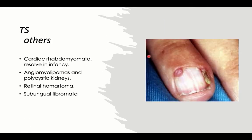Another skin manifestation that can be present is the subungual fibroma, which can also be associated with tuberous sclerosis.